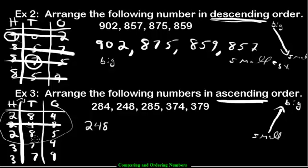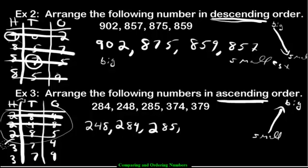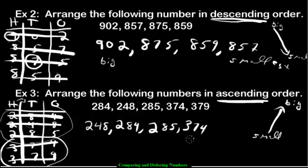Cross out 248. Now we need the next smallest number — least hundreds is a tie again, least tens is a tie again, so we go to the ones. We have four ones and five ones — four is smaller, so 284 is next. Then 285 is third. Now between the last two numbers: 300s and 300s tied, seven tens and seven tens tied, then four ones and nine ones — so 374 is smaller and 379 is the largest.